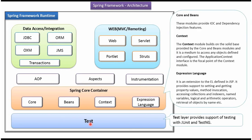The Test layer provides support for testing with JUnit and TestNG. The Core and Beans modules provide IOC and Dependency Injection features. The Context module builds on the solid base provided by Core and Beans, and is a medium to access any objects defined and configured. The Application Context Interface is the focal point of the Context module.